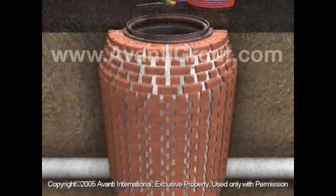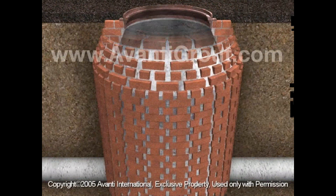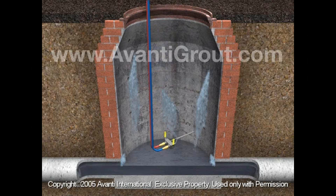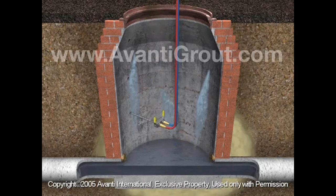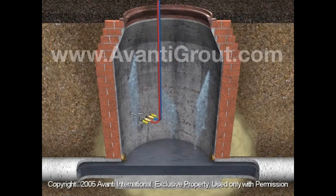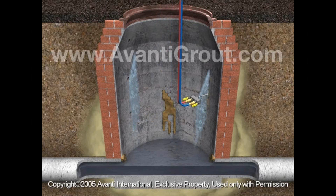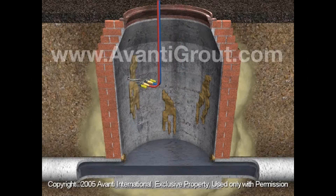Sometimes the manhole has too many leaks to effectively treat each individually. In that case, it can be curtain grouted. In the curtain grouting animation, we use a brick manhole that is leaking. We observe a grout probe injecting grout all the way through the manhole wall out into the surrounding soil. The process is stabilizing the soil and creating a permanent curtain outside the underground structure, proceeding from the lowest point up, with the grout forming a mixture with the soil matrix to stop the water.